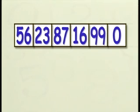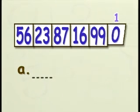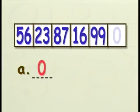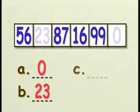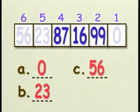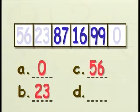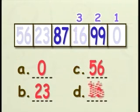Look at the diagram. A: What is the first number from your right? The first number from your right is zero. B: Name the second number from your left. The second number from your left is 23. C: What is the sixth number from your right? The sixth number from your right is 56. D: What is the third number from your right? The third number from your right is 16.